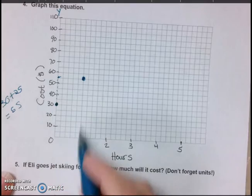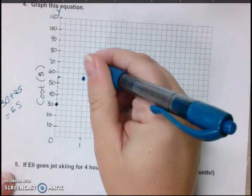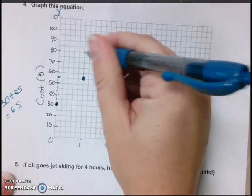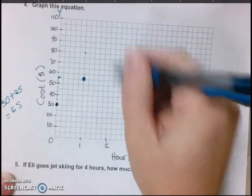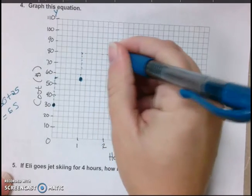So you go 5, 10, 15, 20, 25 over 1. Again, not one line, but I find where 2 hours is, which is right here.